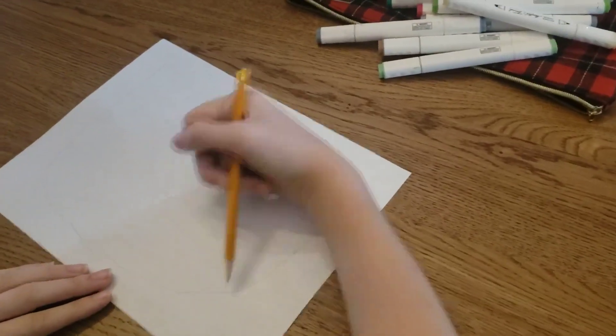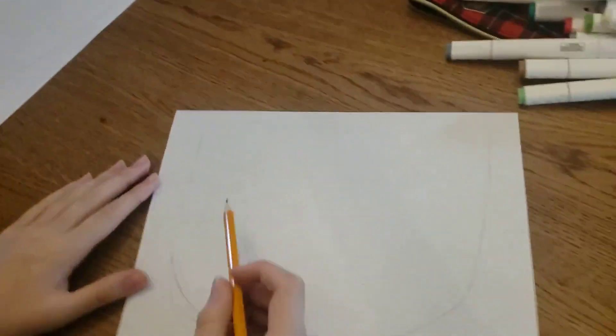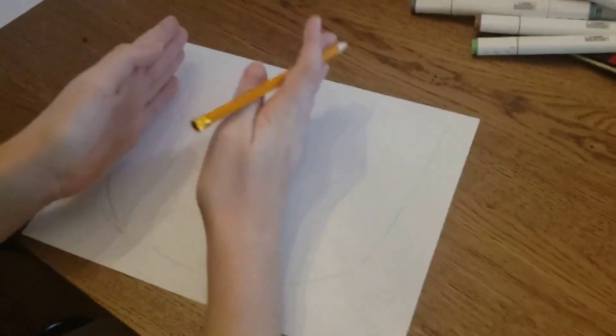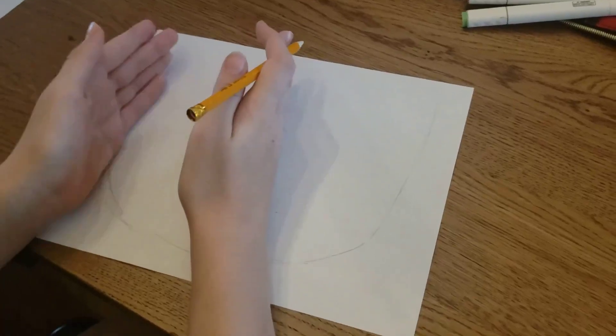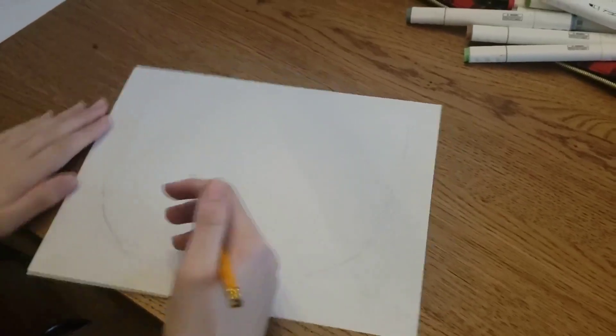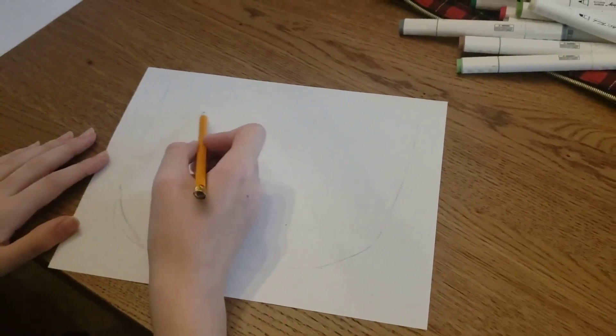Somewhere off to the left, you're going to have an oval shape, and this is going to be the sloth's head. And then we're going to go to this little part right here and we're going to make...